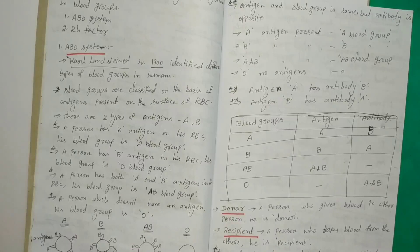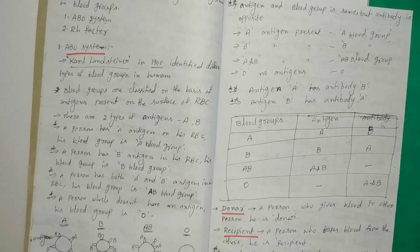Hello everyone, welcome to my channel Book of Science. Today I am teaching about 8th class biology, 6th chapter, the circulatory system. In this class we will learn about blood groups.